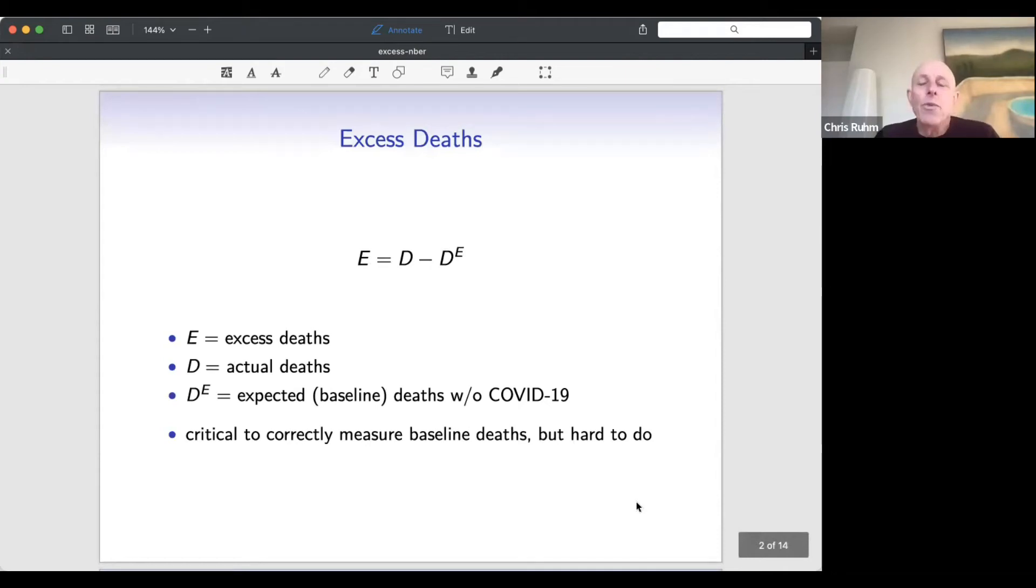The basic idea here is we want to count up excess deaths. And that's very simple. This is as much math as I'm going to give you today. Excess deaths, E, are equal to actual deaths minus the number you would have expected if COVID-19 hadn't occurred. The problem here is, and there's a little bit of difficulty measuring actual deaths very quickly, but that's a minor issue.